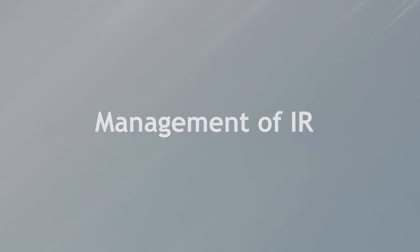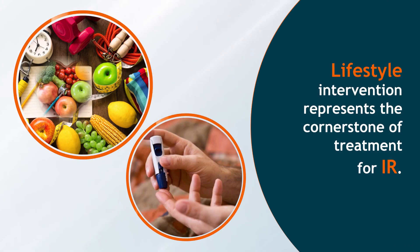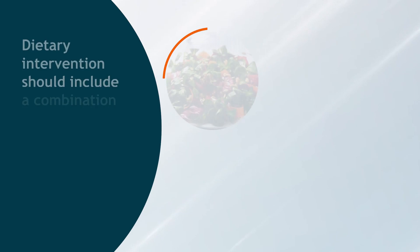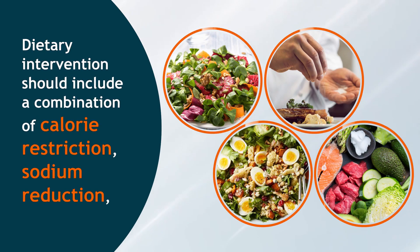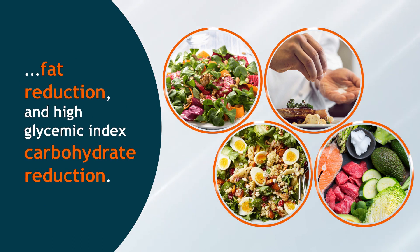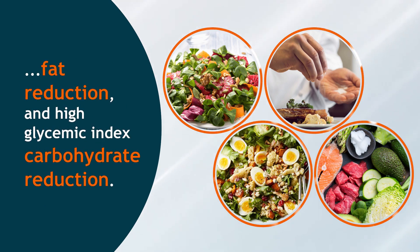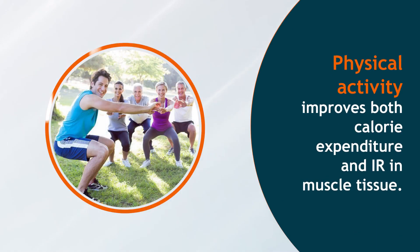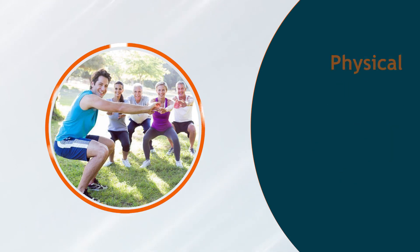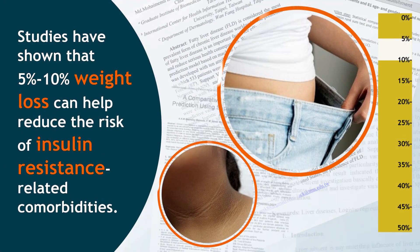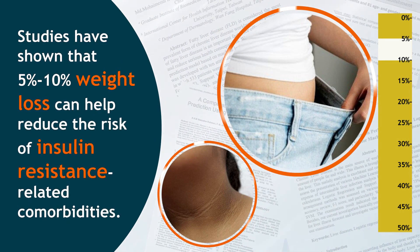Management of IR: lifestyle intervention represents the cornerstone of treatment for IR. Dietary intervention should include a combination of calorie restriction, sodium restriction, fat reduction, and high glycemic index carbohydrate reduction. Physical activity improves both calorie expenditure and IR in muscle tissue. Studies have shown that 5 to 10% weight loss can help reduce the risk of insulin resistance-related co-morbidities.